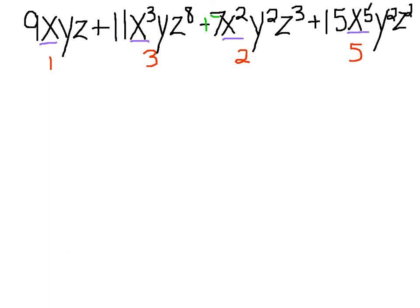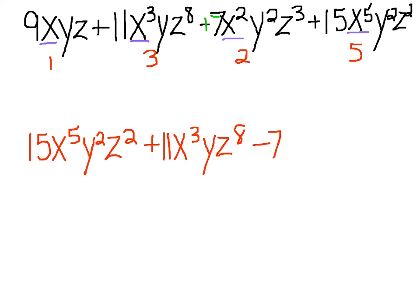So naturally, my 5 is going to come first. So 15x to the 5th, y squared, z squared. Then my 3, so plus 11x cubed, y, z to the 8th. Followed by negative 7x squared, y squared, z cubed. Followed by last, plus 9xyz.